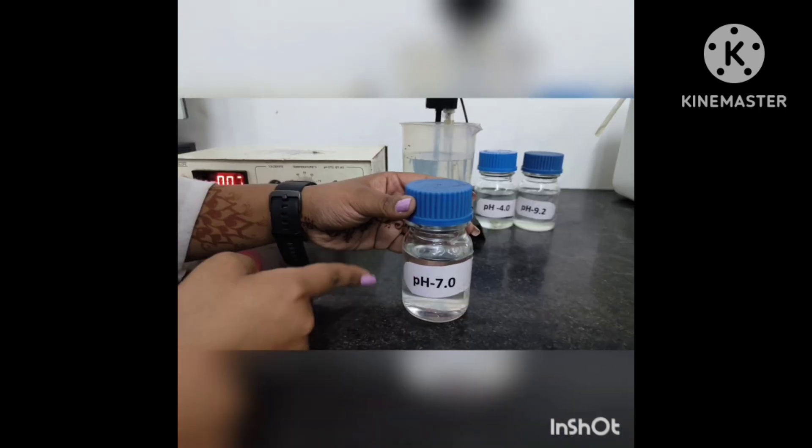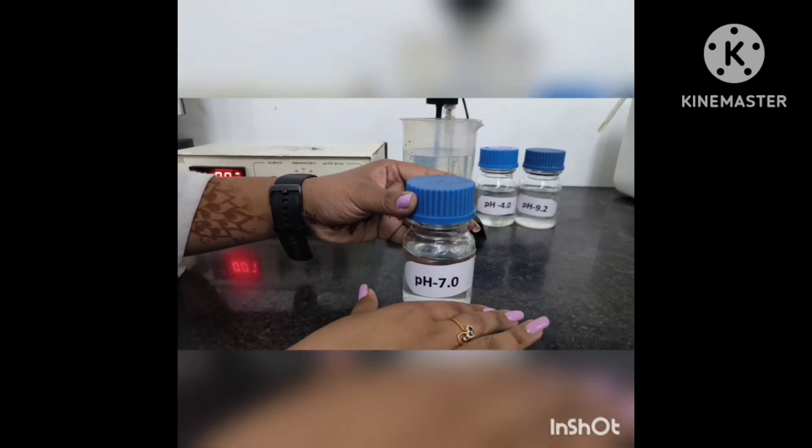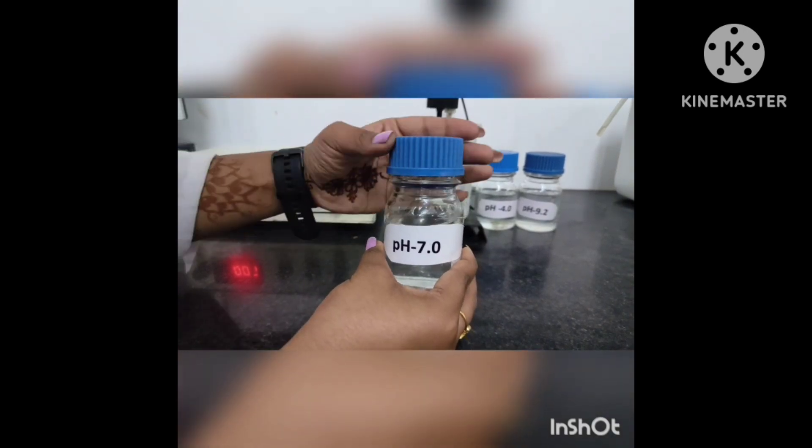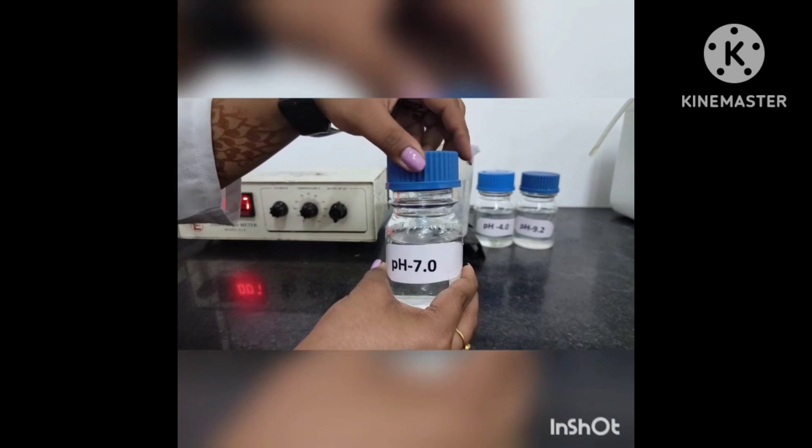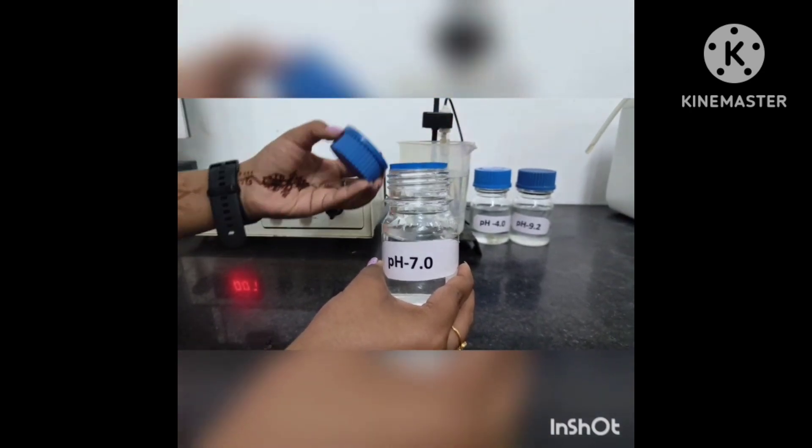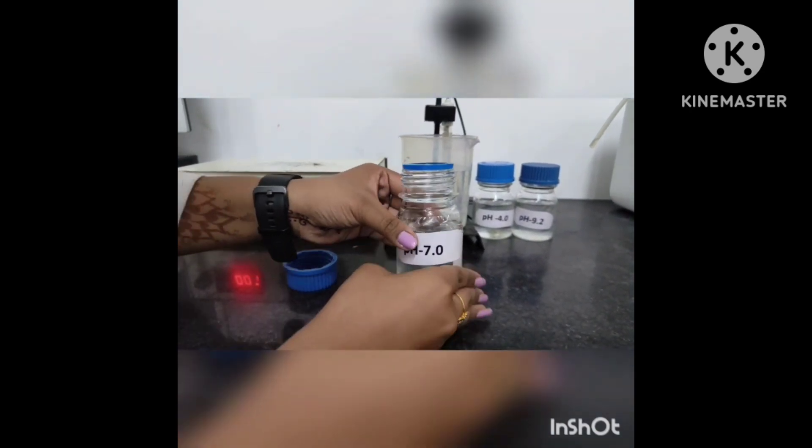Standard pH solution or calibration solution is used for calibration at pH 4, pH 7, and pH 9: pH 4 for acidic, pH 7 for neutral, and pH 9 for basic solutions.